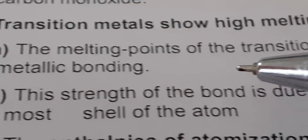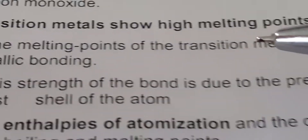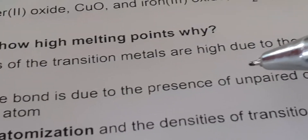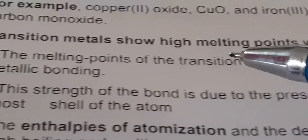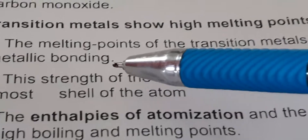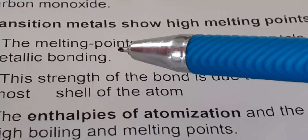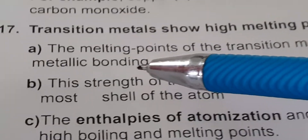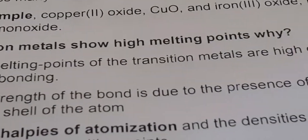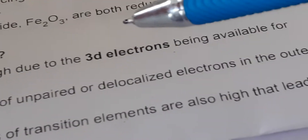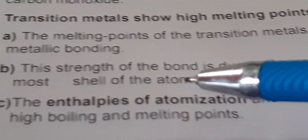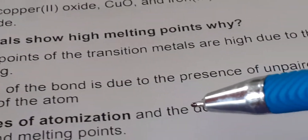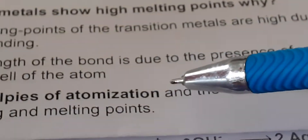There are three reasons. The first reason is that transition metals have high melting points due to the 3D electrons. The 3D electrons are available for metallic bonding. The melting points of transition metals are high due to the 3D electrons being available for metallic bonding.